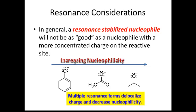In general, if you have multiple resonance forms, they're going to delocalize charge and decrease nucleophilicity. So if you had to choose which one of these was the best nucleophile, it would be the isopropoxide on the right. If you had to choose which one was the worst, it would be the phenoxide all the way on the left.